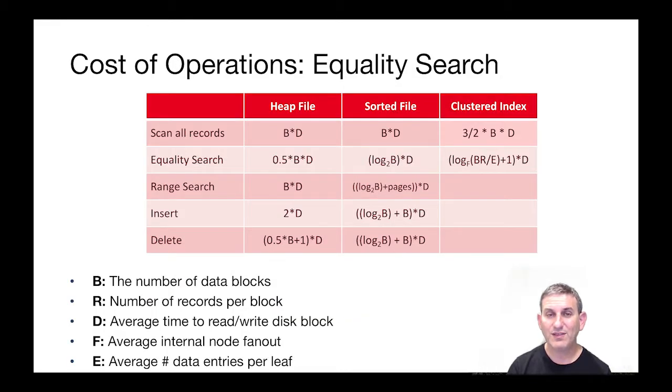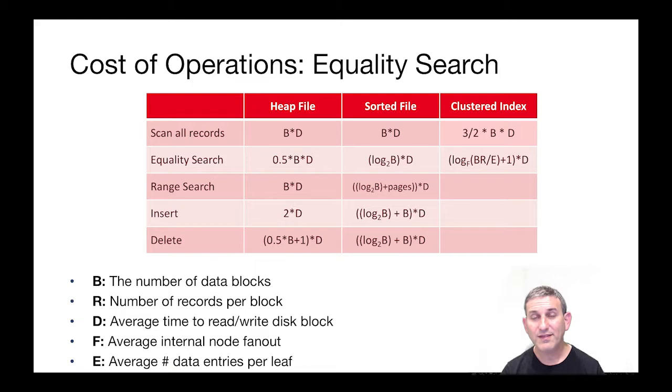Putting that into our table, that's already looking like a winner. The log base F factor is going to be much better than the log base two in the sorted file.